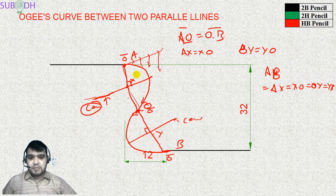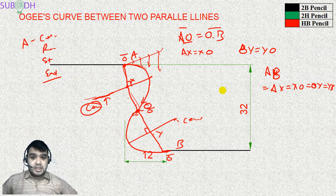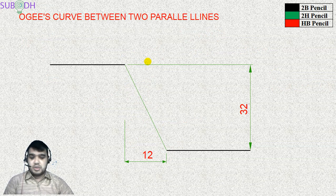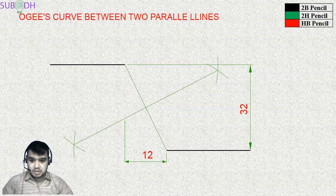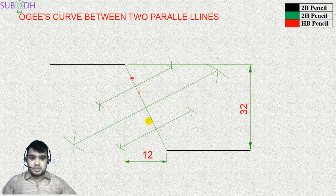The center of the path, the arc, has four requirements: the center, the radius, the start point, and the end point. The center of the path lies on the perpendicular bisector line. We will simply join the midpoint and the end point, then divide the path so that we get four equal parts.